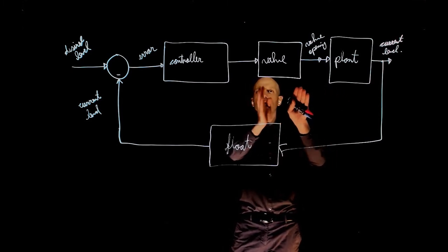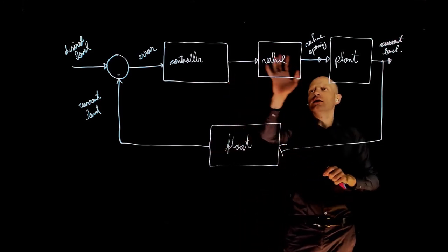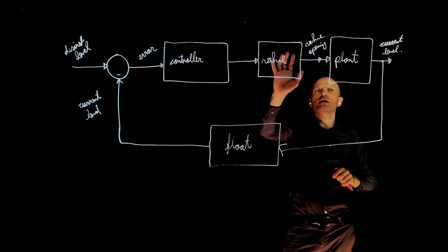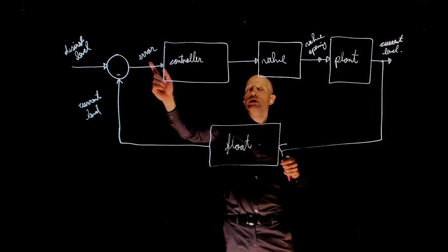To do that, we need the valve, we need the actuator. Here is the actuator, here is the output of the controller, and the valve, the actuator in this case, is what is going to make the water level change in response to the error.